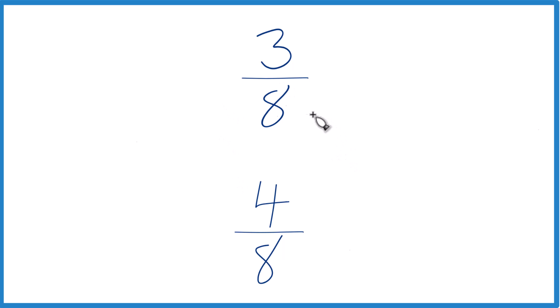The other way is find a common denominator, but what's nice here is we already have a common denominator. We have 8 for both denominators. That means we can just compare the numerators to see which fraction is greater.